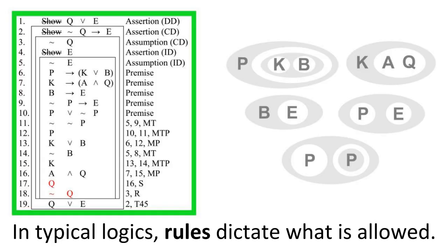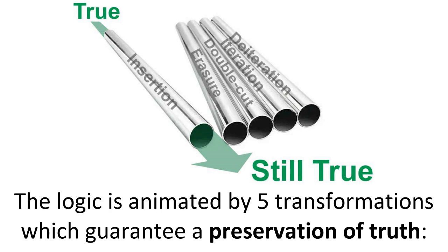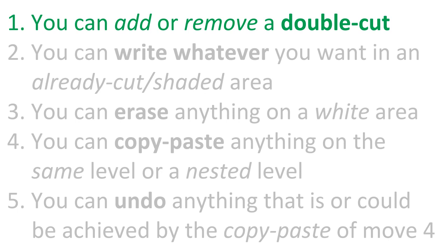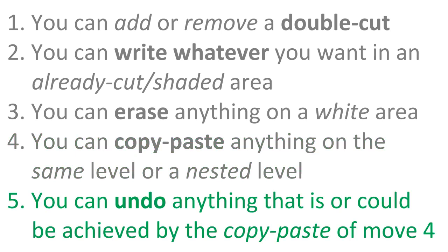In typical logics, rules dictate what is allowed. Here, shapes constrain what can be done. The logic is animated by five transformations which guarantee a preservation of truth. You can add or remove a double-cut. You can write whatever you want in an already cut or shaded area. You can erase anything on a white area. You can copy-paste anything on the same level or a nested level. You can undo anything that is or could be achieved by the copy-paste of move four.